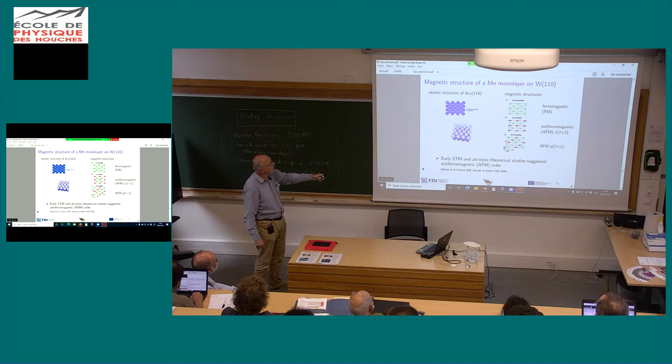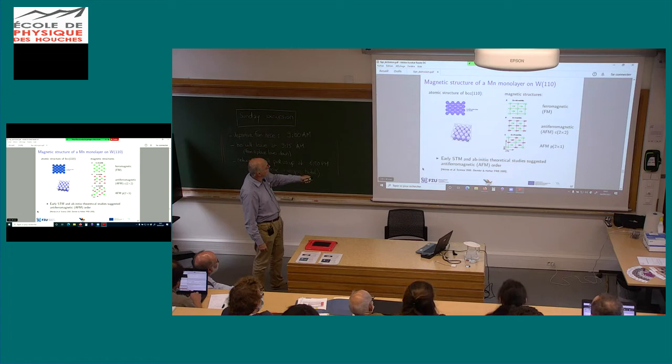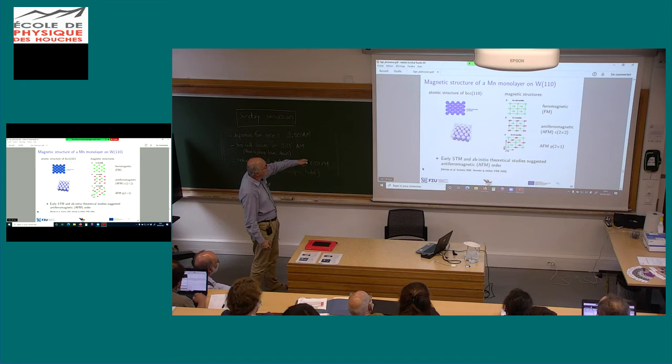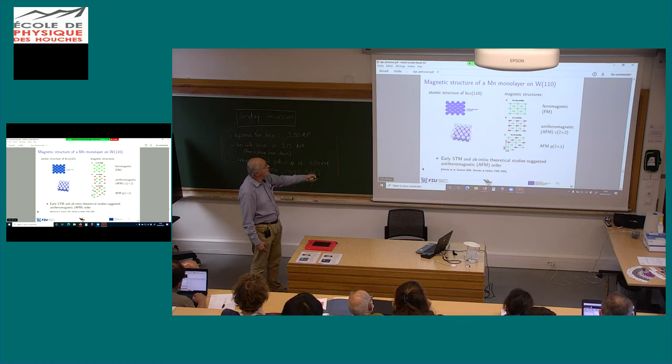Now the case study: a manganese monolayer on tungsten. It's a BCC surface, so the surface itself is not cubic — it has two-fold symmetry — meaning you see it differently in one direction versus the perpendicular direction. So you would have linear dichroism even without magnetism. The manganese on tungsten is typically assumed to be antiferromagnetic with some superstructure. However, later it was suggested that the structure is a ferromagnetic cycloidal spin spiral — a cycloid spin spiral where the magnetic moment spirals in the direction of the wave propagation but is antiferromagnetic, so two atoms are always antiparallel.